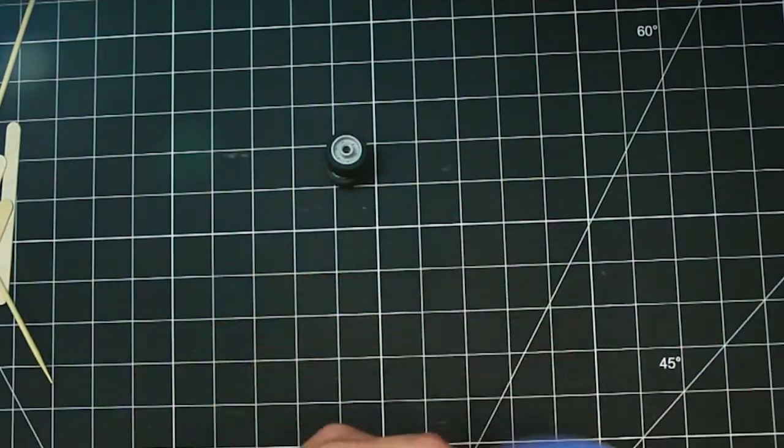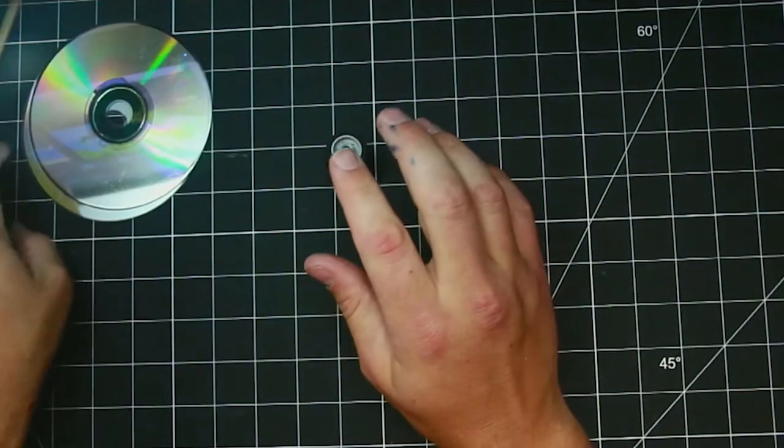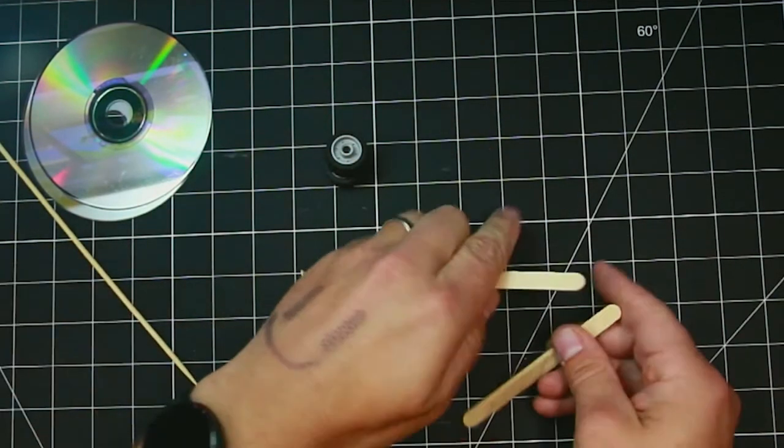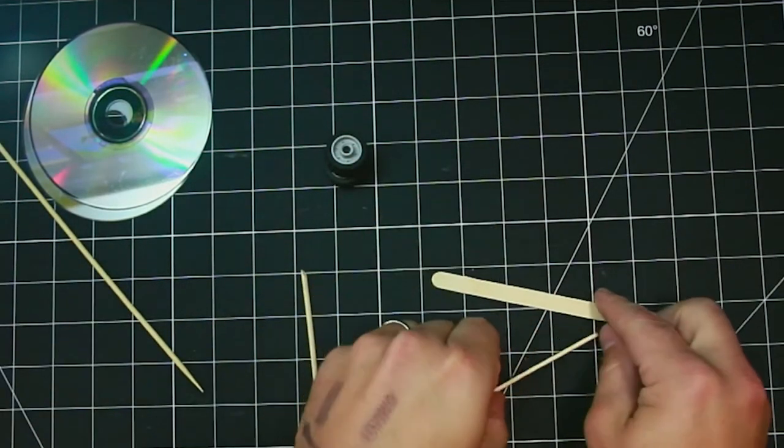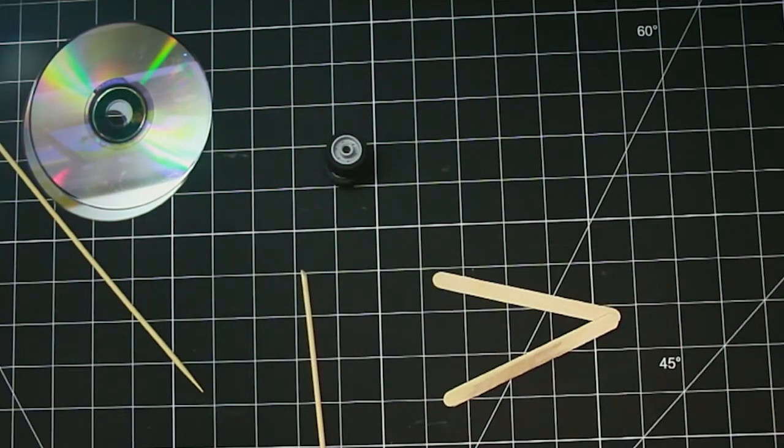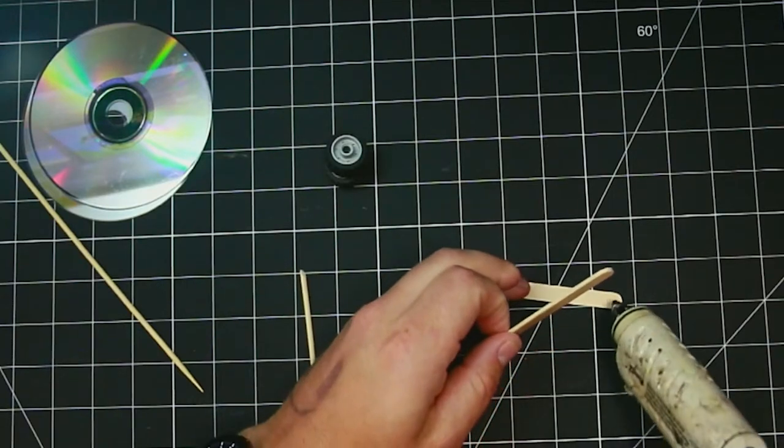So the basics of making a rubber band car after you figure out what your wheels are going to be. We need a frame and really briefly, just a couple of popsicle sticks in a V shape. We'll get it started if I glue the fronts together.